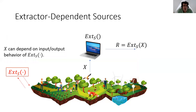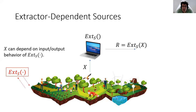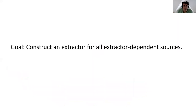This brings us to the main motivation: extractor-dependent sources. We assume the source — nature — can depend on the input-output behavior of the extractor with the particular seed s. So we're not assuming the source is worst-case or can depend on s in the worst-case manner; it's not fully seed-dependent, but it's not independent either. It can depend on s only through the input-output behavior of the extractor with the given seed. In other words, an extractor-dependent source is a source that can make oracle queries to the extractor with the given seed s. The main question is to construct extractors — which we'll call ED extractors — that can extract randomness from all extractor-dependent sources.